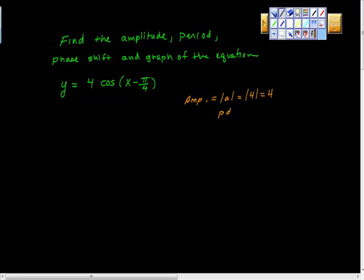Period is equal to what? 2 pi over absolute value of B. Good. 2 pi over absolute B, which is the same as saying 2 pi. Good job.